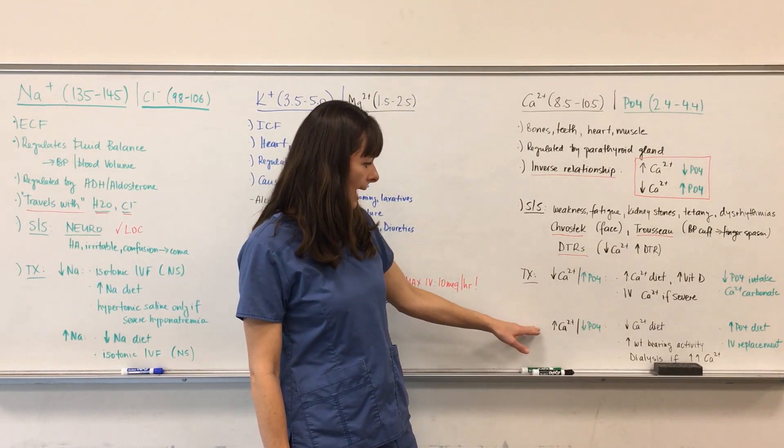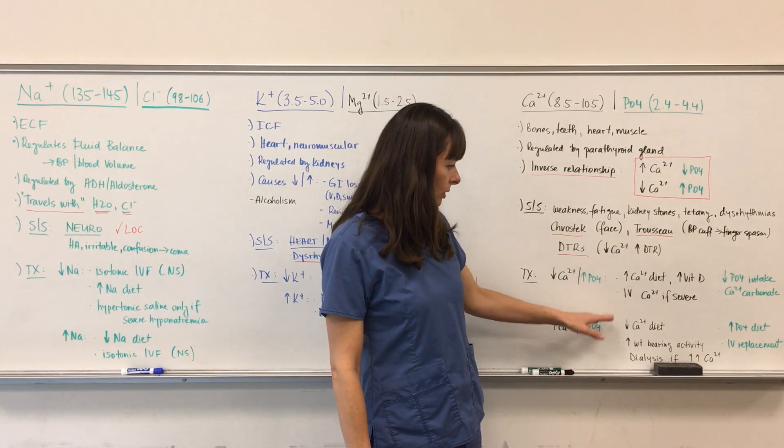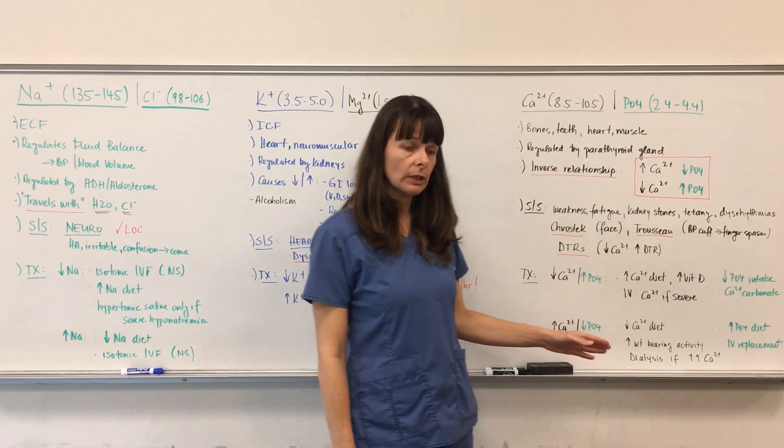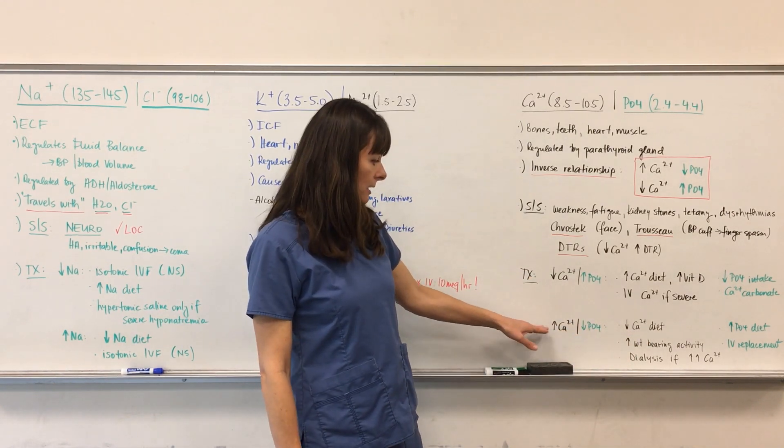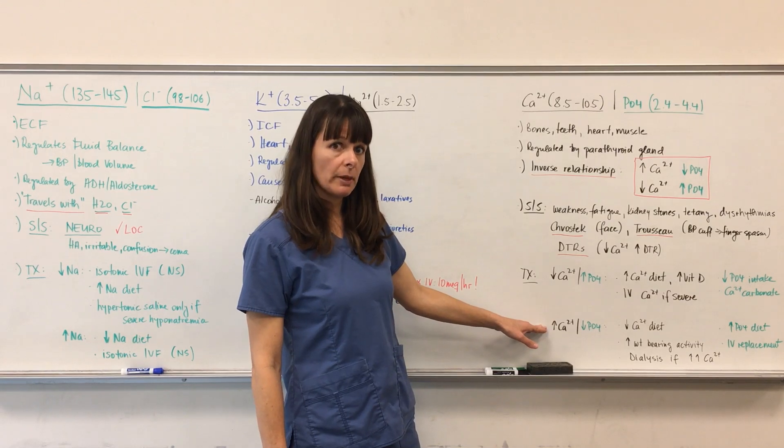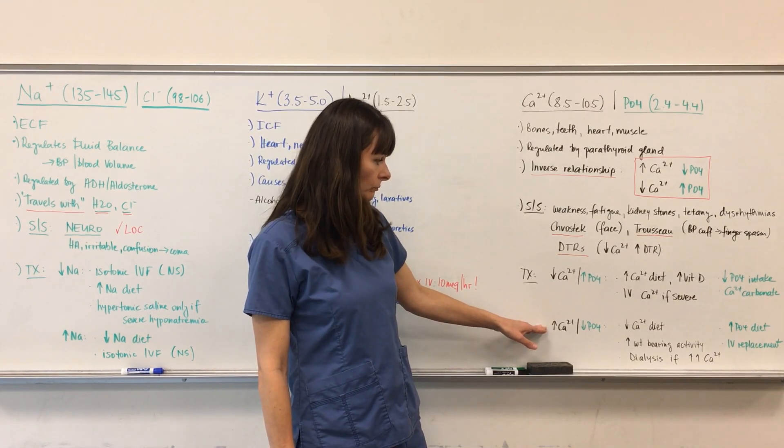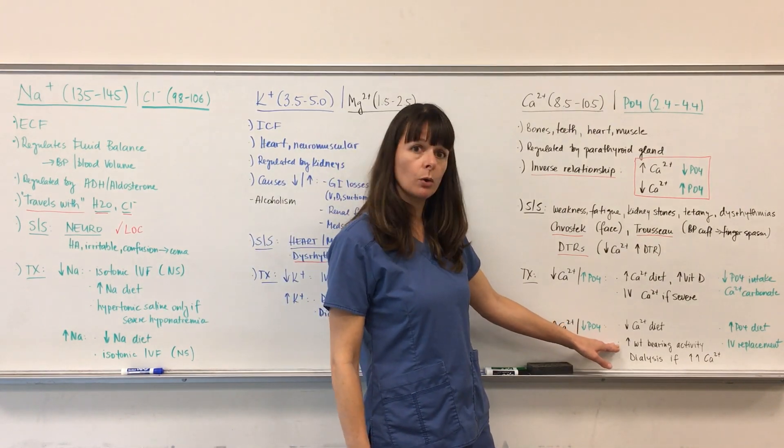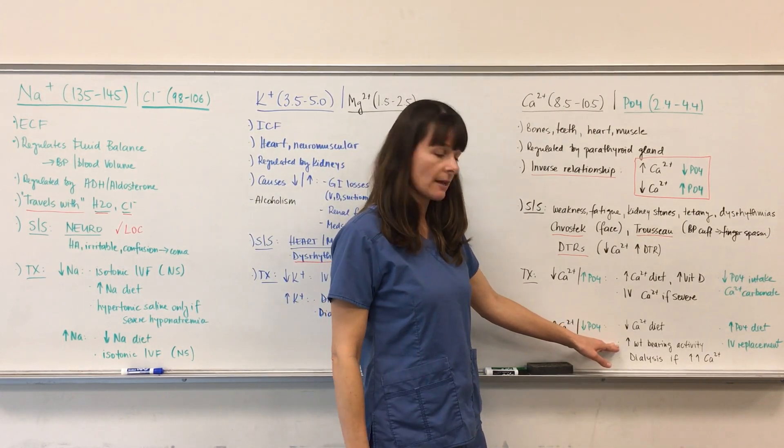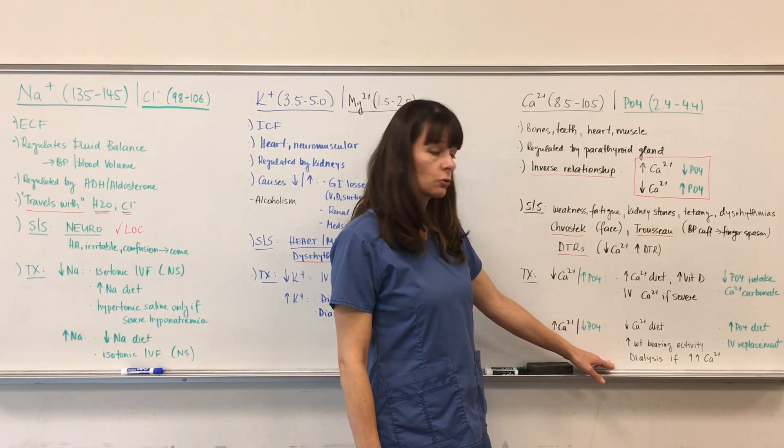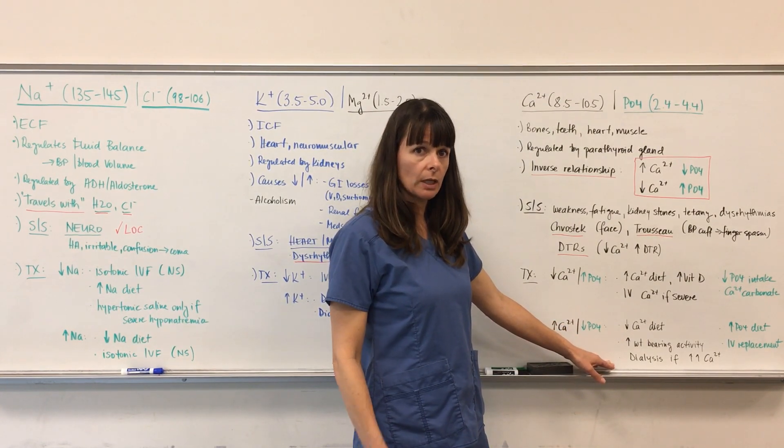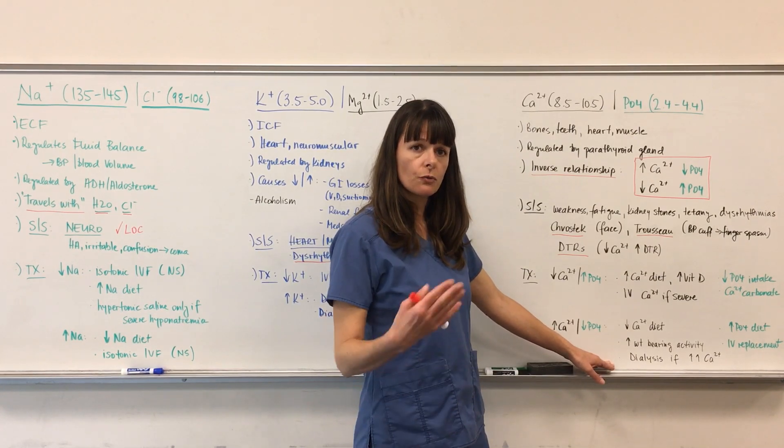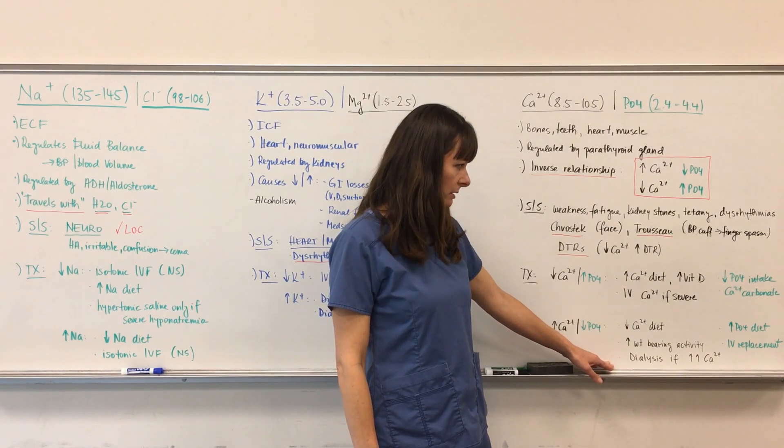For high calcium and low phosphate, we'll decrease calcium in the diet and increase weight-bearing activity. What that means is that the calcium we measure in the patient's bloodstream is moved from the bloodstream into the bone because the bone with weight-bearing activity needs that calcium. If the calcium gets really high and we can't get it out any other way, we'll have to put the patient on dialysis to filter their blood and help them get rid of that excessive calcium.